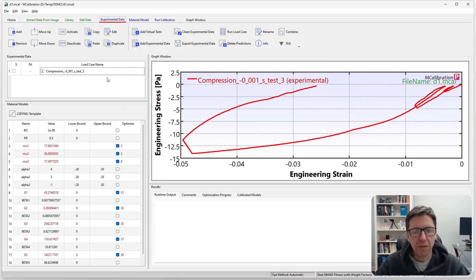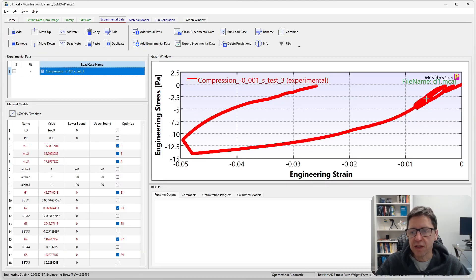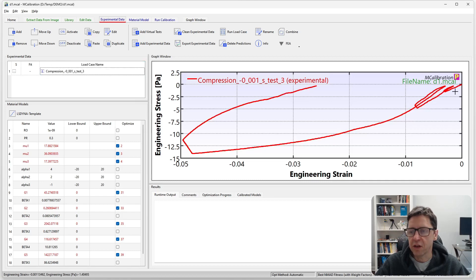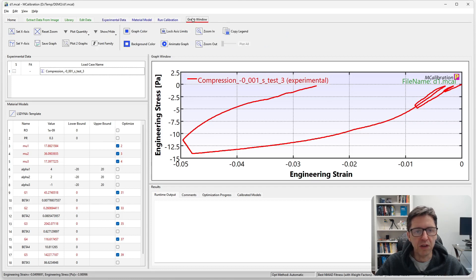So here's the window of mCalibration. I have an experimental data set here. You can see that it's uniaxial compression with unloading and there's some relaxation periods built into it as well.